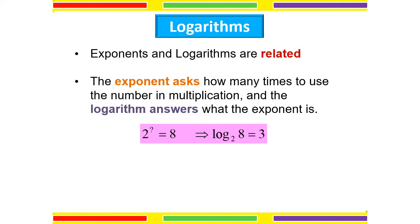For example: 2 to the power of what will give us 8? The log will answer that question. Log base 2 of 8 — to get 8, we have to multiply 2 for 3 times. So 2 to the power of 3 equals 8. Log base 2 of 8 means how many times 2 has to be multiplied to get 8, which equals 3 times. That is what logarithm means.